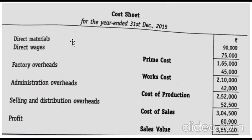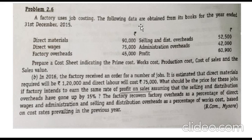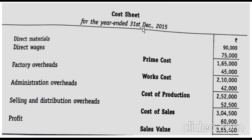This is the cost sheet for the current year — which we consider as the previous year — and the estimated cost sheet will be the current year. According to the question the factory uses job costing, and all information is for the year 2015. They've asked us to prepare data for 2016 using this information, so let us first prepare the cost sheet for the year ended 31st December 2015.